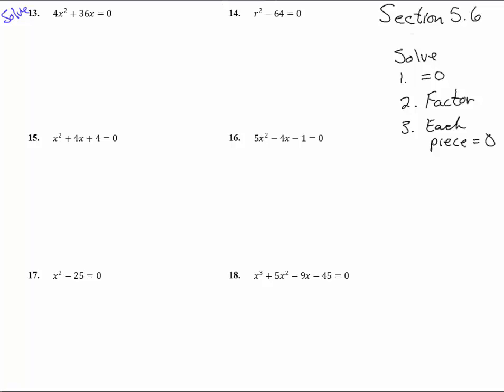Here are the steps for solving polynomial equations. Number one, get it equal to zero. Number two, factor it. And because zero is a multiplication that everybody knows how to do, all we need to do is make each little piece equal to zero and we got it.